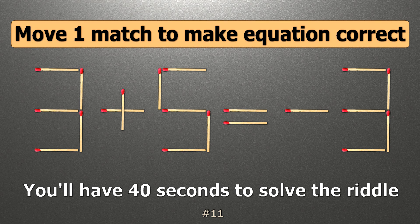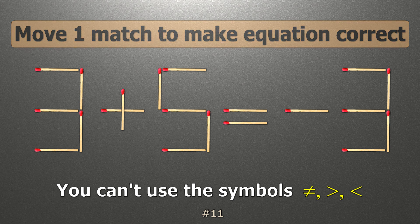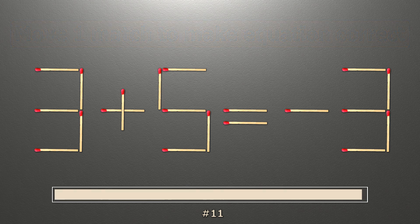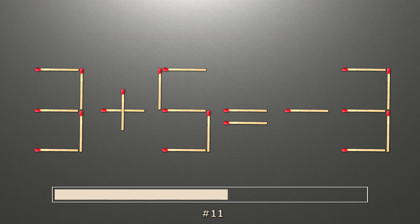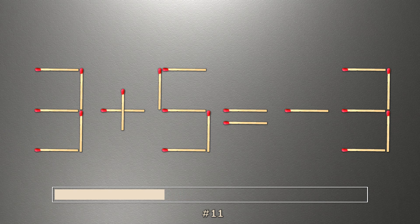We have the equality 3 plus 5 equals minus 3. Our equality is wrong. We need to move one match to make our equality correct.